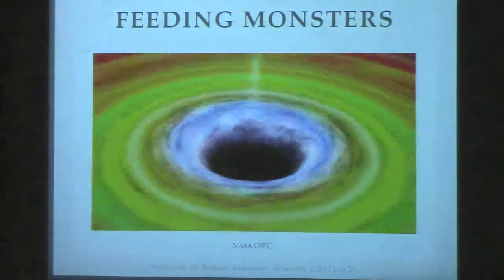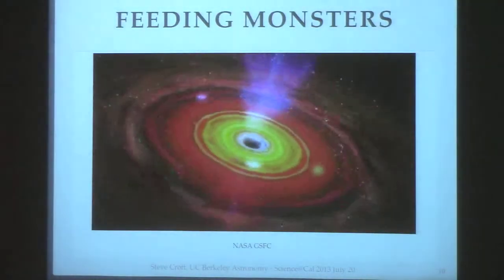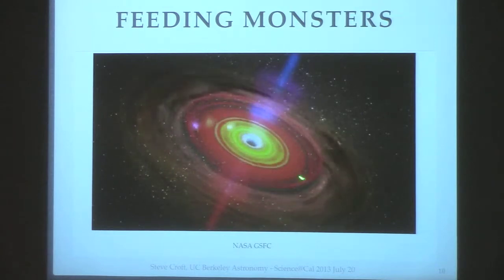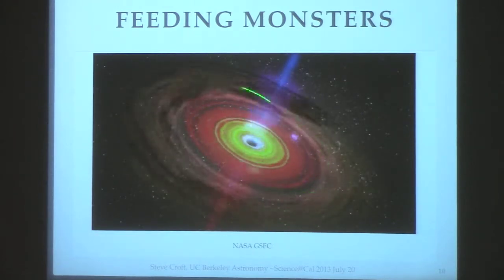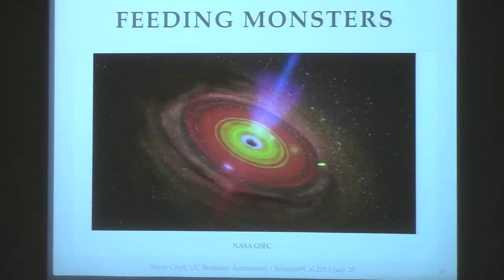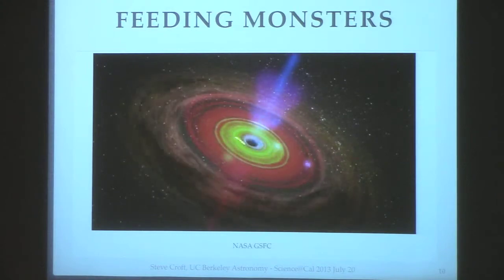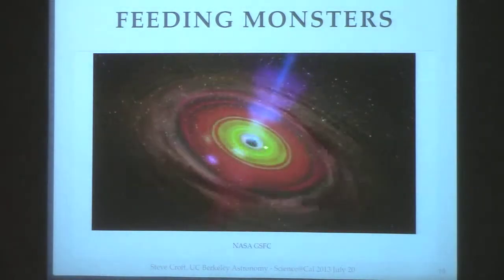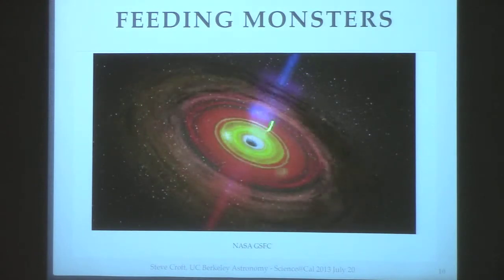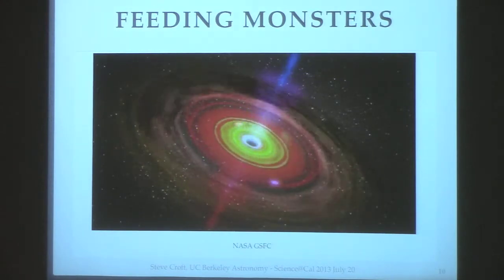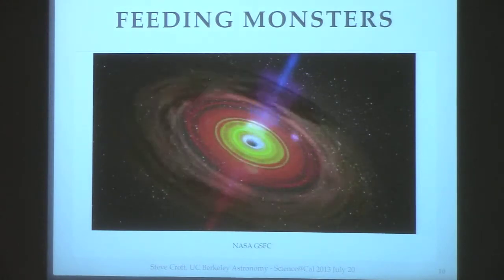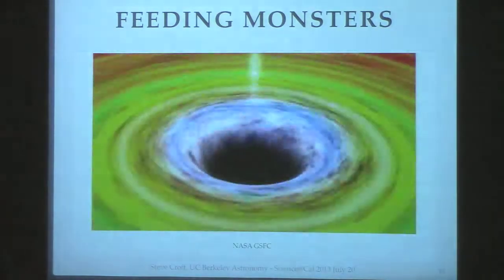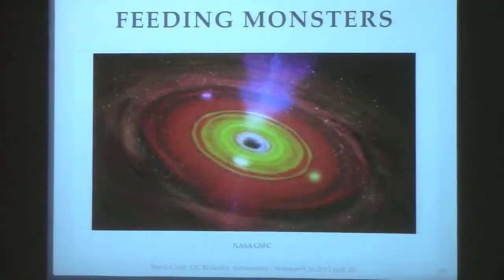These feeding monsters are at the centers of galaxies. The black hole at the center of our own galaxy isn't feeding this dramatically, but we see many that are, with hot gas spiraling in what we call an accretion disk, connected — in ways not fully understood — to jets shooting out at close to the speed of light. Jets of particles — they may be electrons and protons, or electrons and positrons, we don't even know that yet — shooting out into intergalactic space. These are some of the most dramatic and energetic processes in the universe.